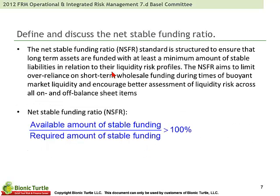The net stable funding ratio is the other ratio added in Basel III, in addition to the liquidity coverage ratio. It is structured to ensure that long-term assets are funded with at least a minimum amount of stable liabilities in relation to their liquidity profiles. It aims to limit over-reliance on short-term wholesale funding during times of buoyant market liquidity and encourage better assessment of liquidity risk across all on- and off-balance sheet items. The available amount of stable funding divided by the required amount needs to be at least one.